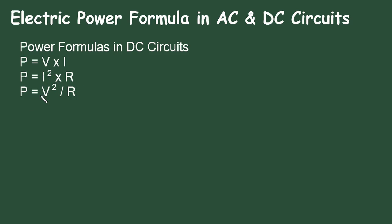Also in the form of voltage, power is equal to V square by R. So these are the three formulas in DC circuits.